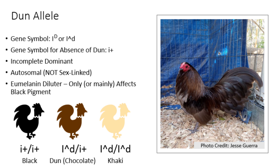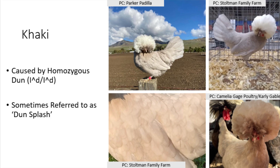When one copy of the Dunn allele is present, the black eumelanin is diluted to a dark chocolate. Like blue, Dunn can take many shades. When two copies of the Dunn allele are present, the black is further diluted to a light tan color. This is referred to as khaki, which is also the hobby name used in the standard of perfection. Sometimes this color is referred to by breeders as Dunn splash; however, personally I'm not a fan of this because the term splash is already associated with the blue gene.